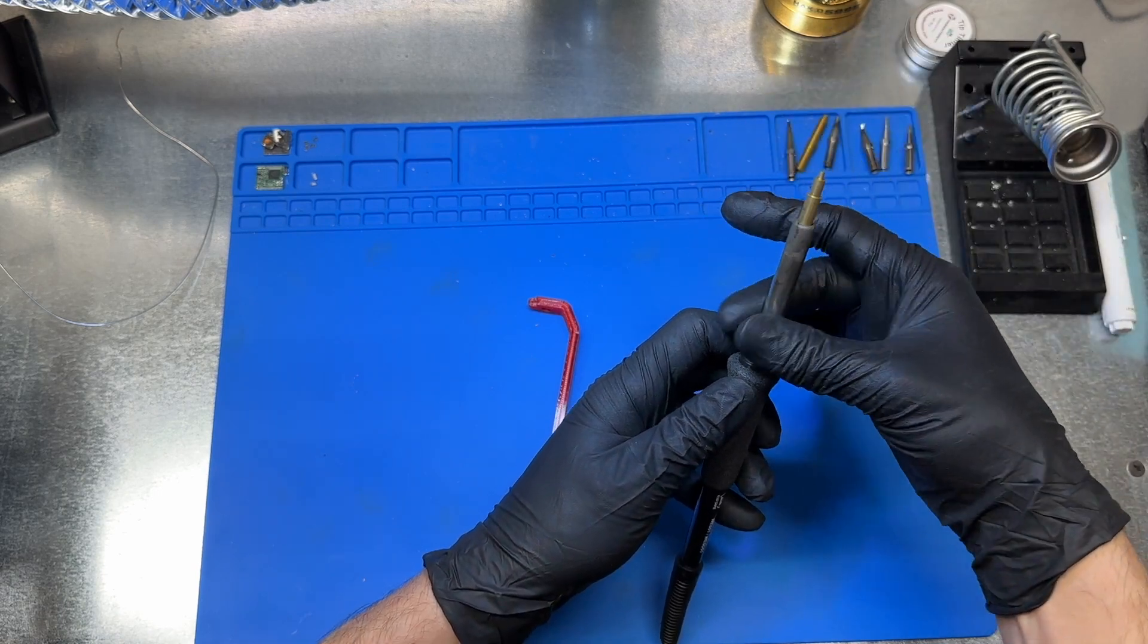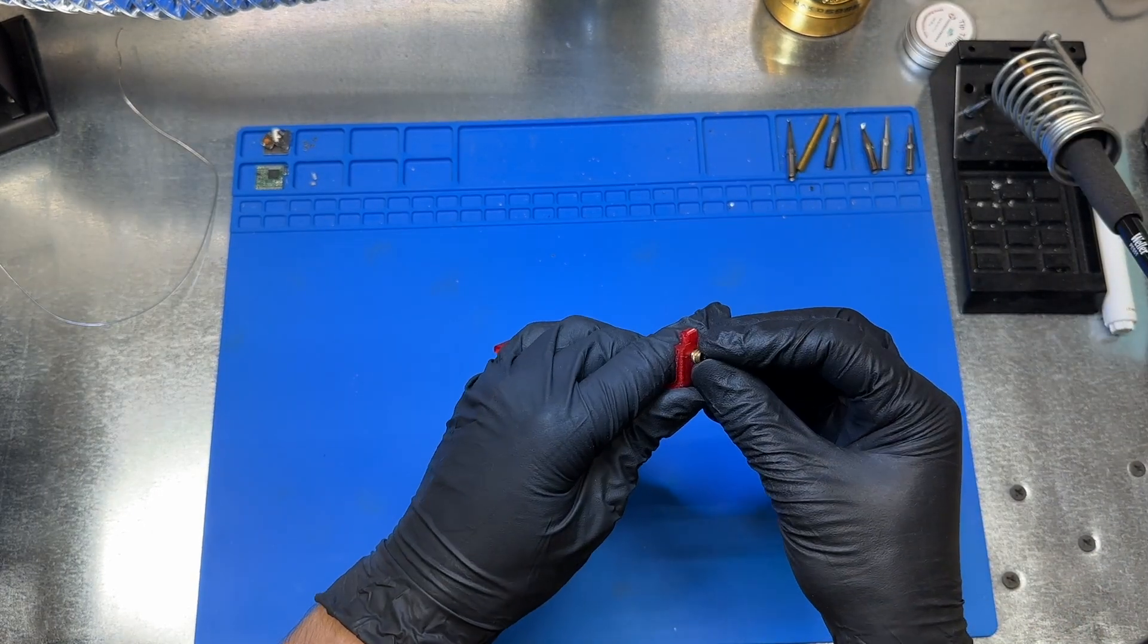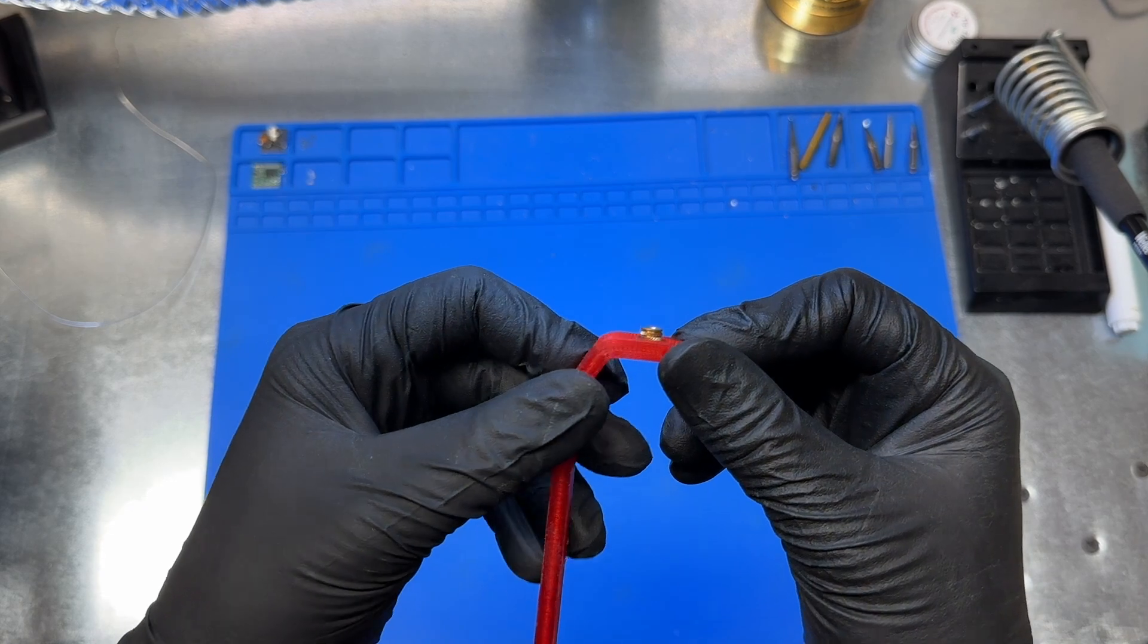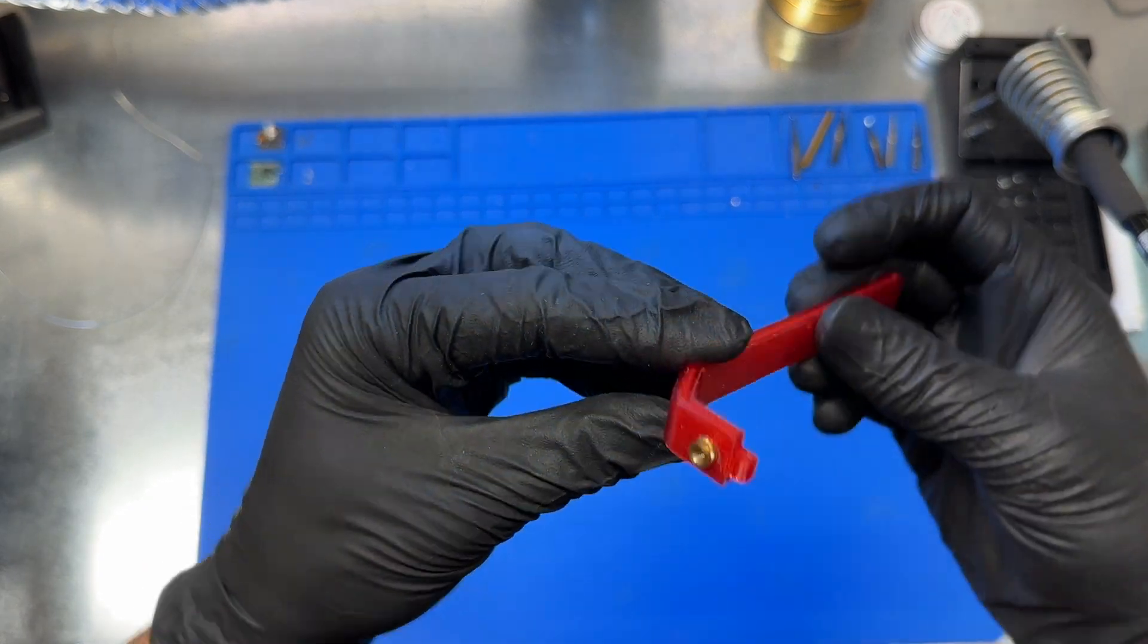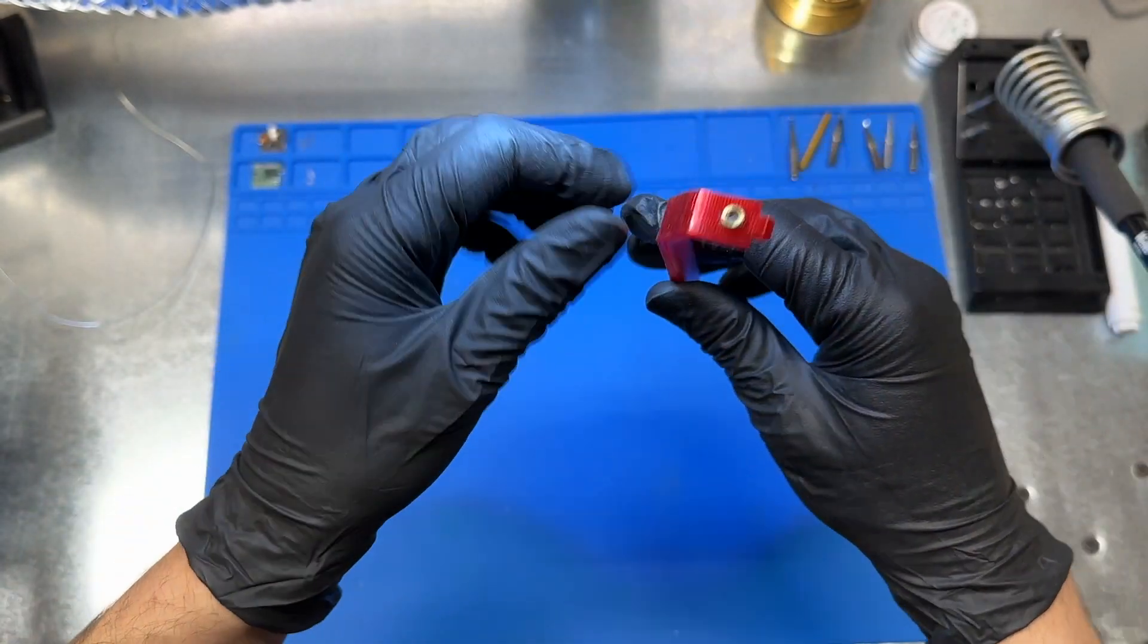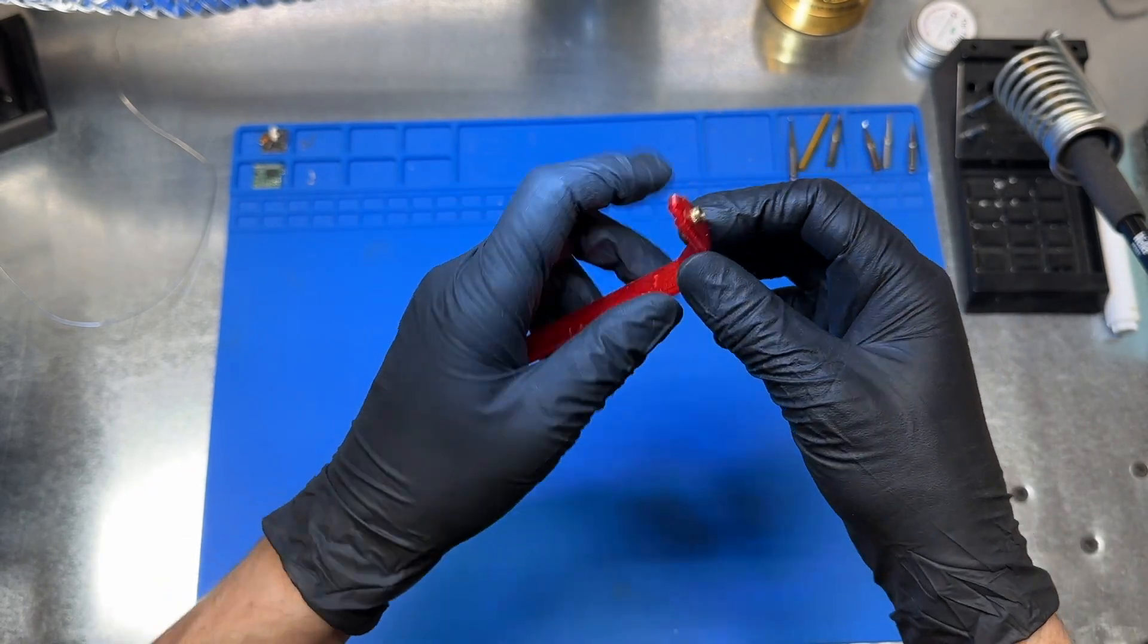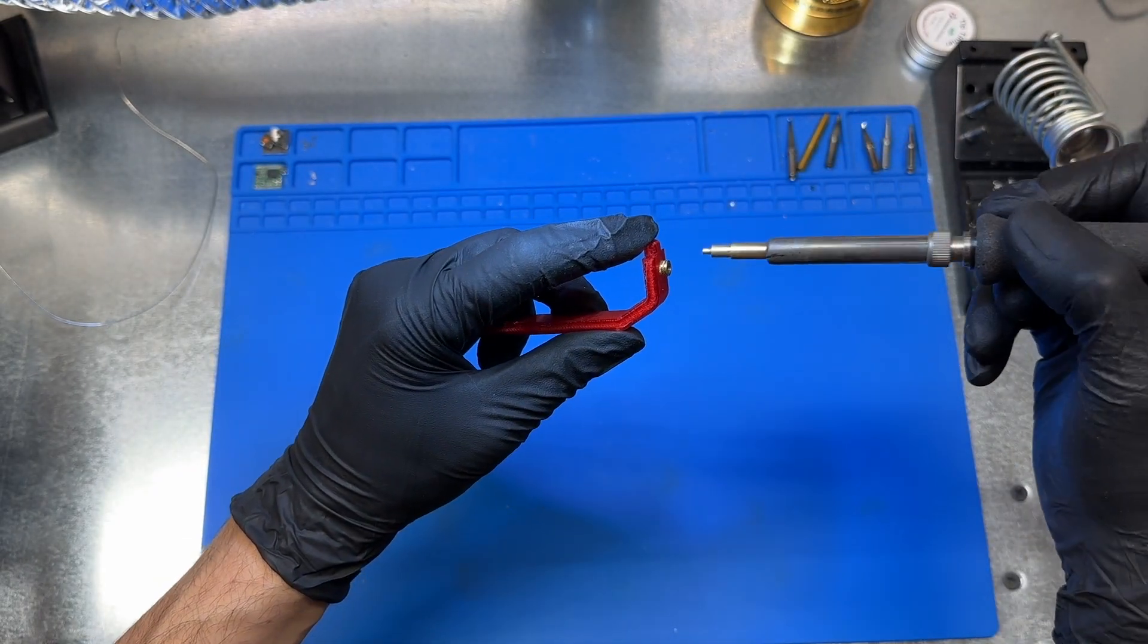When designing 3D models, I like to size the holes so that the end of the heat set insert can be hand pressed into the plastic and held in place with friction. Now I can heat up my iron and apply gentle but steady pressure until the insert starts sinking into the plastic.